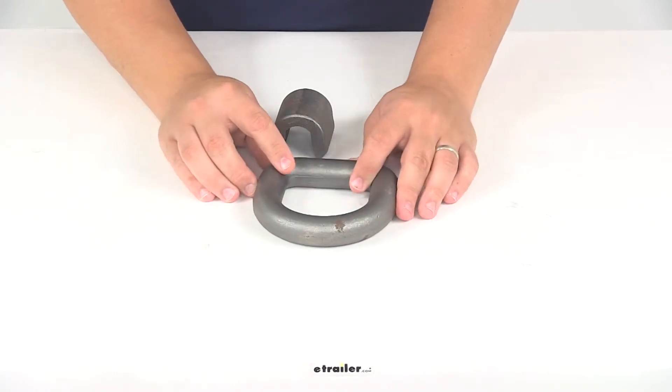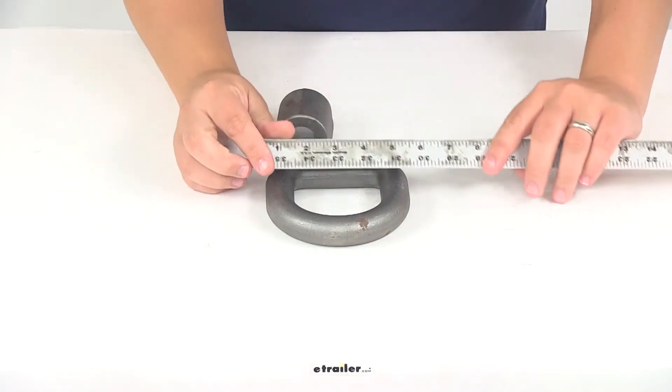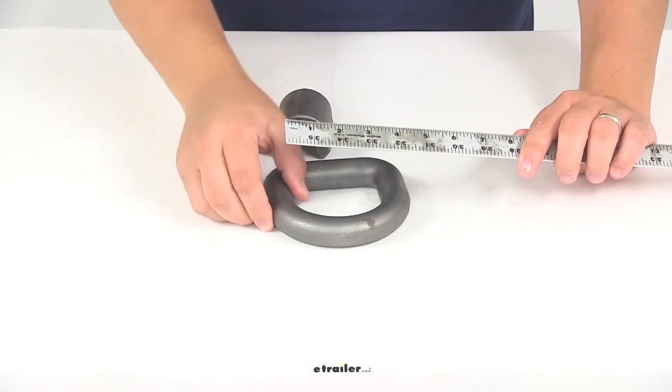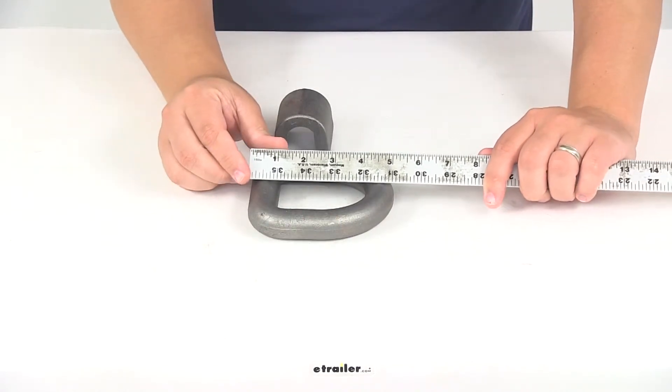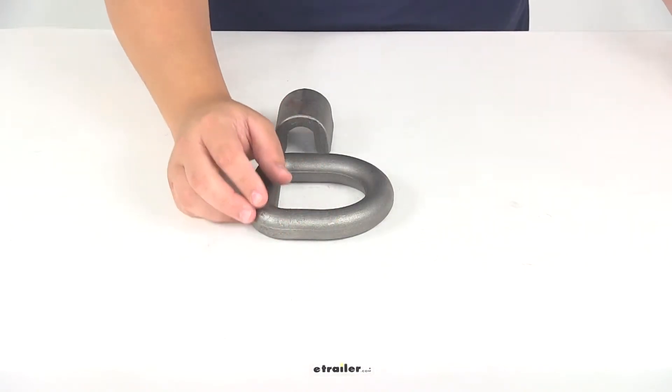When it comes to the dimensions of just the ring, measuring outer edge to outer edge, that gives us a measurement of about five inches, and measuring this direction outer edge to outer edge is also about five inches. The thickness of the ring measures one inch thick.